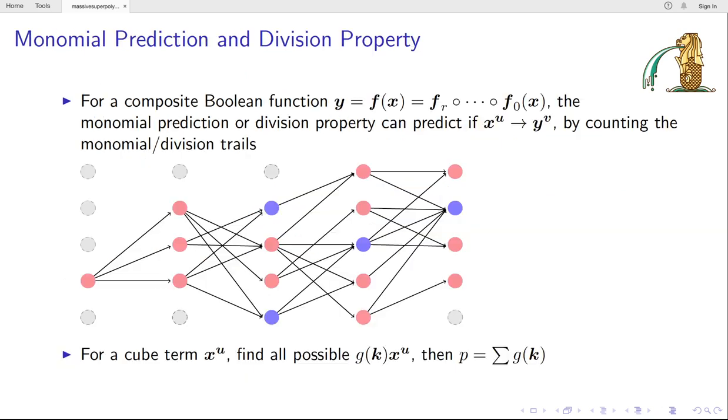For a composite Boolean function, the monomial prediction or division property allows us to predict if a monomial x_2^u does or doesn't appear in the monomial y_2^v by counting the number of so-called monomial or division trails. For a cube term x_2^u, if we can determine all possible monomials g(k) x_2^u, then the Super-Poly can be determined accordingly.